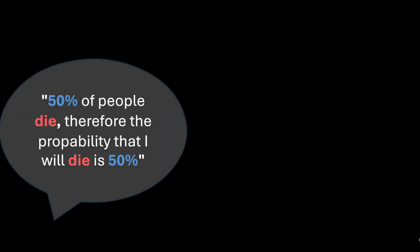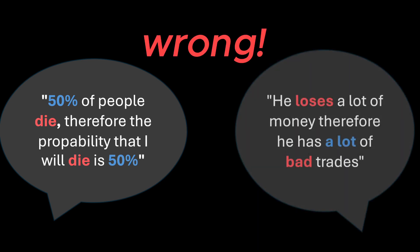From the outside, if you didn't know about the dice and only knew that over 50% of people died, you might wrongly assume that each person had a 50% chance of dying. Or, if you said a trader lost a lot of money, you might wrongly assume he made mostly bad trades.